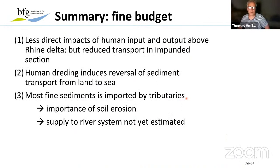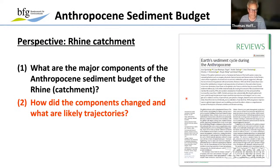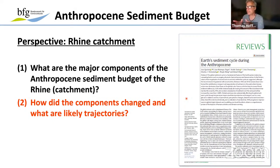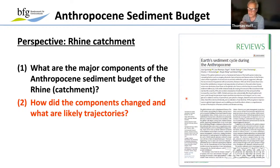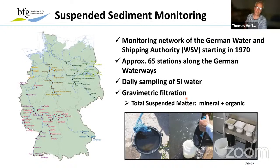Now I'd like to use the remaining time to look in more detail at changes over time, because what we saw in the sediment budget represented average conditions between 1990 and 2010. The major question is how these different components changed historically and in more recent times due to the massive management going on in the Rhine.